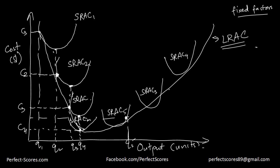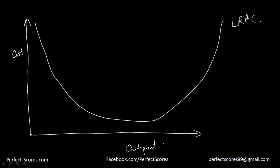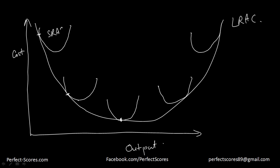Let me draw this much more clearly. This is the cost on the vertical axis and this is my output on the horizontal axis. This is my long run average curve. I'm producing this many units on short run average curve 1, then short run average curve 2. This is the minimum short run average curve where the minimum point actually meets the long run average curve. As I produce more and more beyond that, my cost just keeps on increasing. These short run average curves make up the total long run average curve. This is the optimum quantity where you produce at the lowest ever cost.